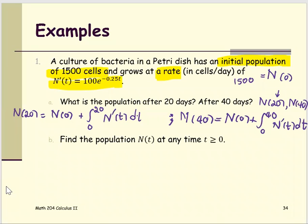For the second part, find the population N at T at any time T. To save our time, instead of doing manually N at 20 using the formula, which means we have to do the integral twice and plug it in twice, we just start with the general version for part B.